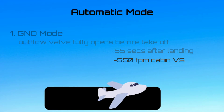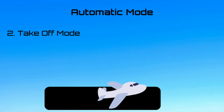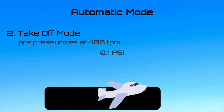Takeoff mode: to avoid a pressure surge at rotation, the controller pre-pressurizes the aircraft at a rate of 400 feet per minute until the delta P reaches 0.1 PSI. At liftoff, the controller initiates the climb phase.